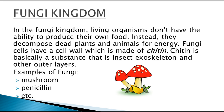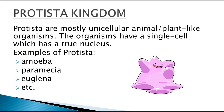The protista kingdom. Protista are mostly unicellular, animal- or plant-like organisms. The organisms have a single cell which has a true nucleus. Examples of protista are amoeba, paramecia, euglena, etc.